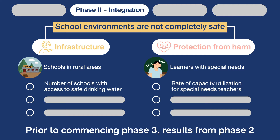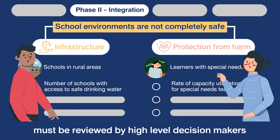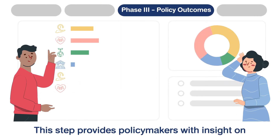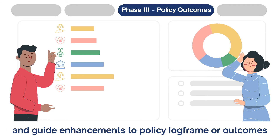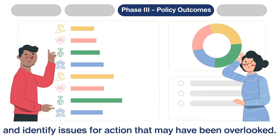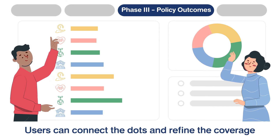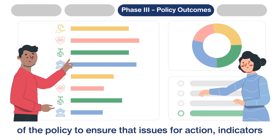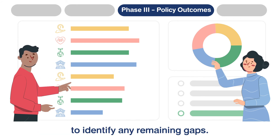Prior to commencing phase three, results from phase two must be reviewed by high-level decision makers from a coverage perspective. This step provides policymakers with insight on how well the policy document has addressed the key issues, and guides enhancements to the policy log frame or outcomes and identifies issues for action that may have been overlooked. Users can connect the dots and refine the coverage of the policy to ensure that issues for action, indicators and outcomes are mapped against each other to identify any remaining gaps.